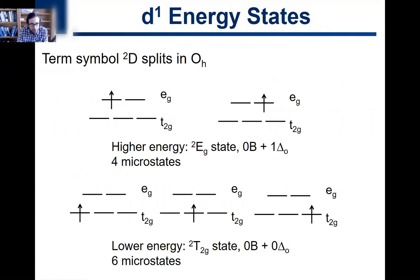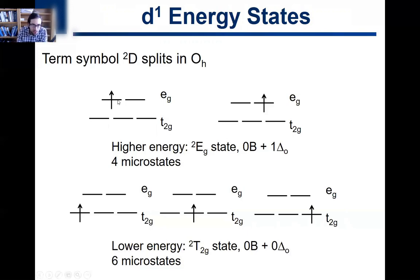All 10 microstates are doublet D. The term symbol doublet D splits in an octahedral environment. You're going to have the higher energy states where the one electron is in an EG orbital. We call this the doublet EG state — one unpaired electron in EG. That's going to have an energy of 0B, since there's no electron-electron repulsion, plus 1 delta O because we're in the EG, which is delta O higher than the T2G.